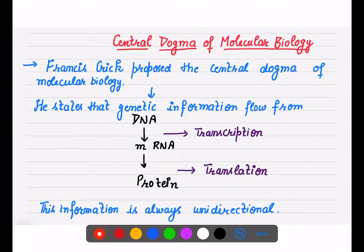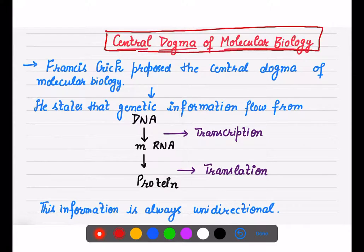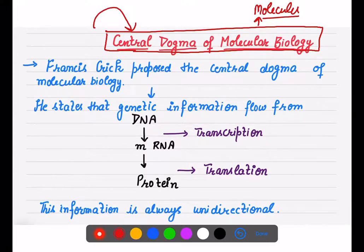First, I will discuss one important term: the Central Dogma of Molecular Biology. Molecular biology is basically the study in which we deal with molecules, and DNA is one such molecule. It is the molecular basis of inheritance because through DNA, traits and characters are inherited and transferred from parents to offspring. The Central Dogma was proposed by Francis Crick.